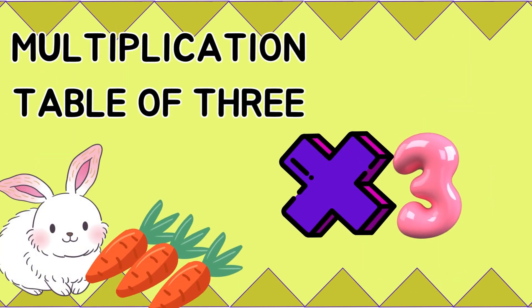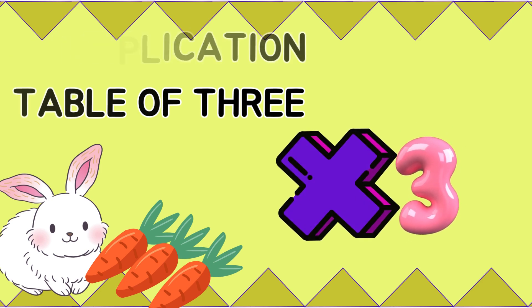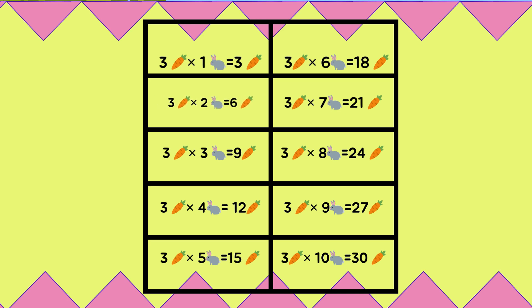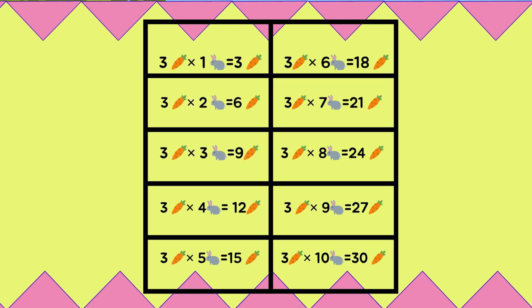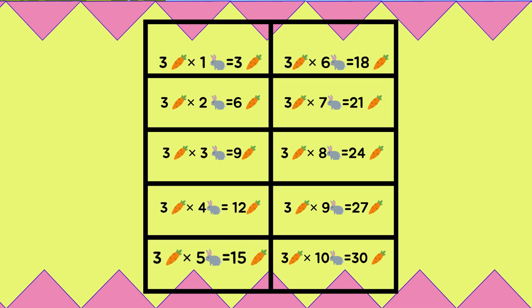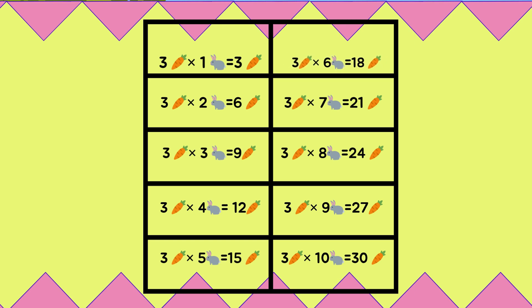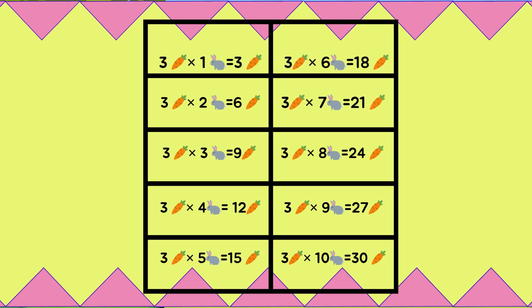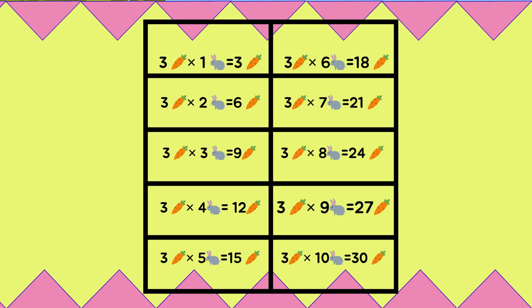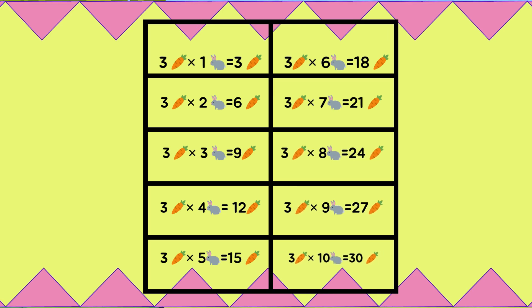Now let's look at the multiplication table of 3. 3 times 1 is 3. 3 times 2 is 6. 3 times 3 is 9. 3 times 4 is 12. 3 times 5 is 15. 3 times 6 is 18. 3 times 7 is 21. 3 times 8 is 24. 3 times 9 is 27. 3 times 10 is 30.